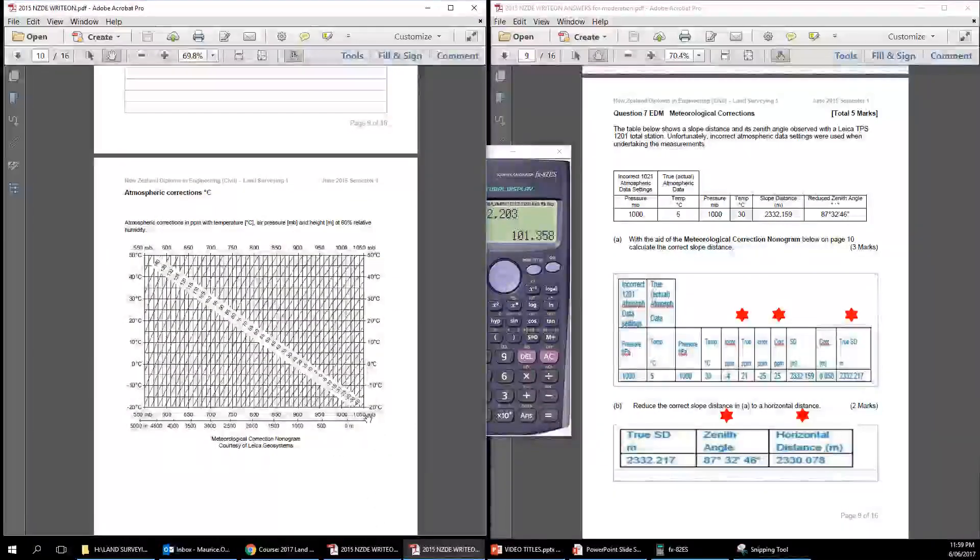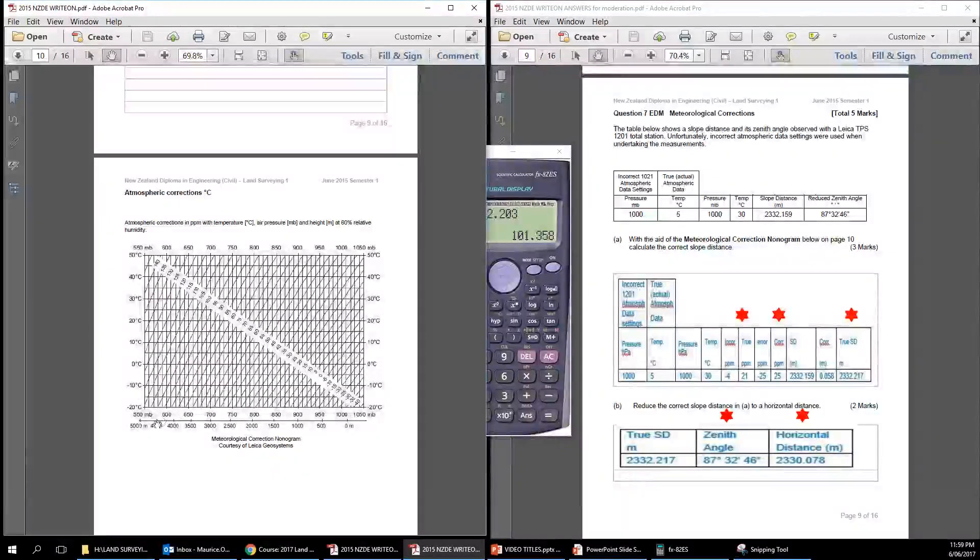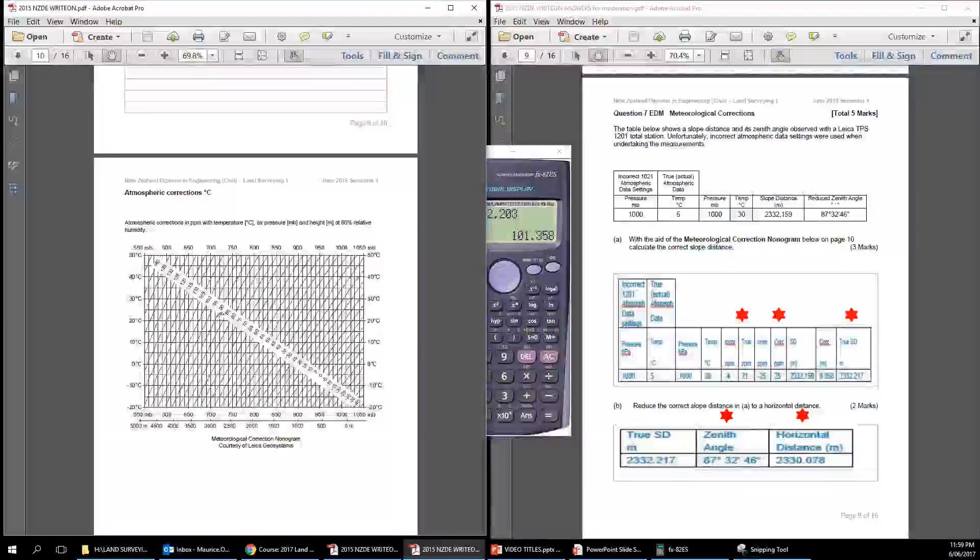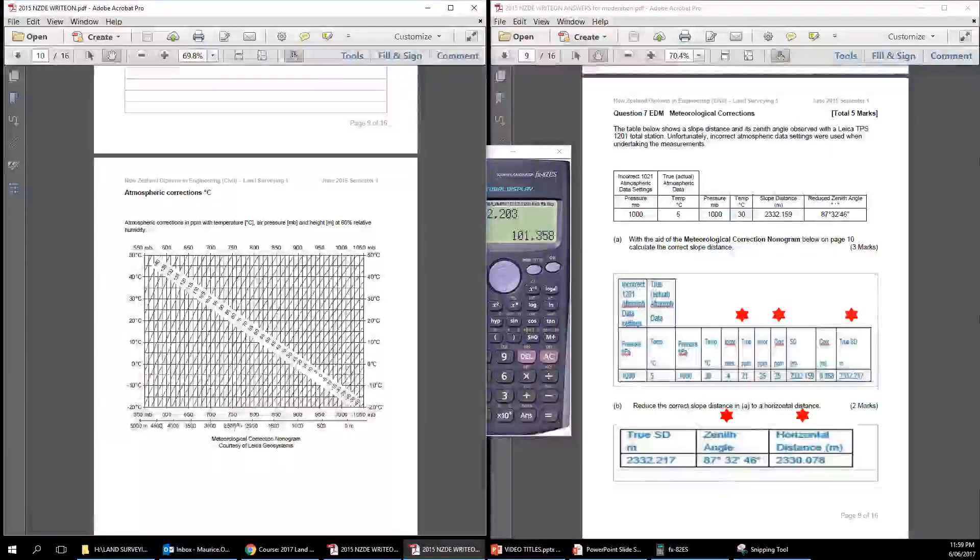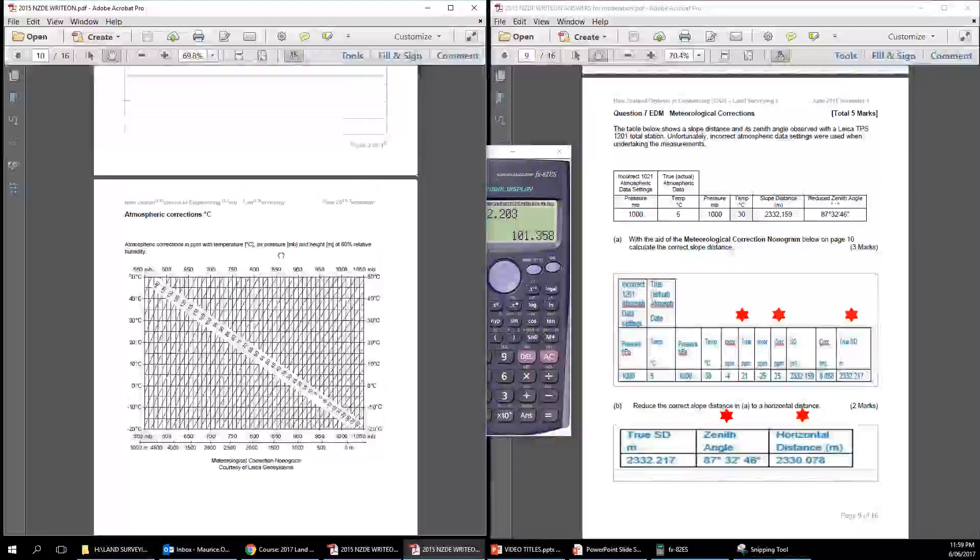And it has up here, it has degrees C, degrees C up here, and then this way. And then across here is the millibars. So we've got 1750, 1000, that's in here. And then up here on the angle is the correction, is the correction in atmospheric corrections in ppm, parts per million, with temperature and pressure and height at 60% relative humidity. So we've got, we can use both pressure, this is pressure across here in millibars, and this is height above sea level here. So that's how that all works.